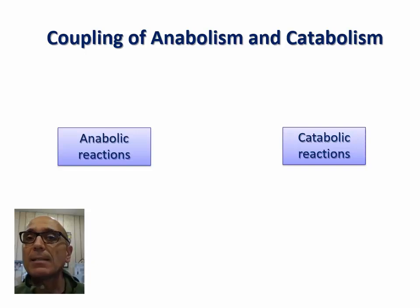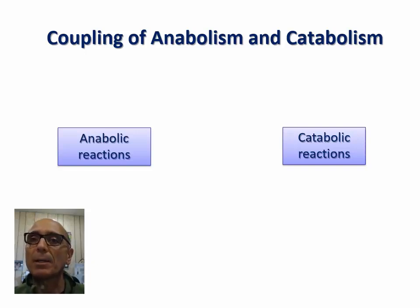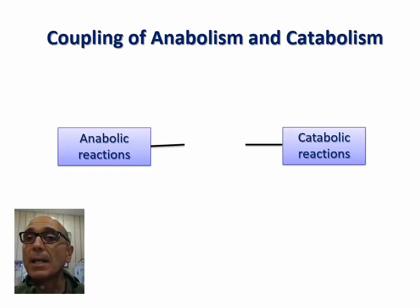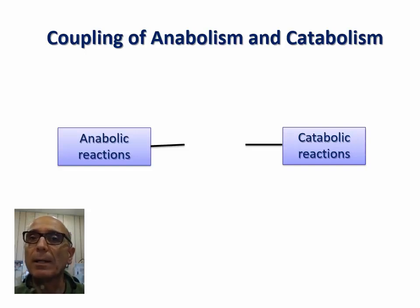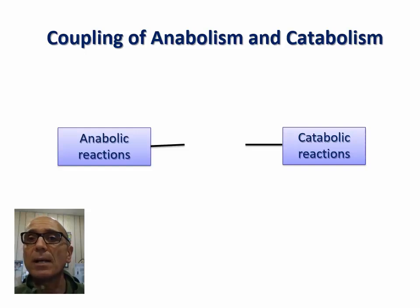In cells, catabolic reactions, which release energy, drive anabolic reactions, which require a source of energy. This coupling, however, is not direct. The link that secures the coupling of anabolic and catabolic reactions is the universal energy currency of cells, which is known as the molecule of ATP.